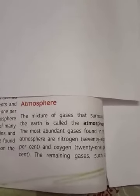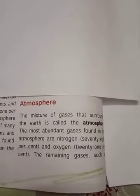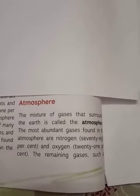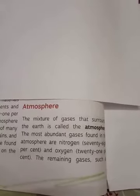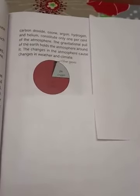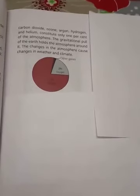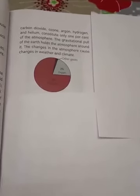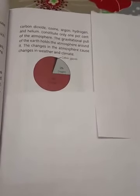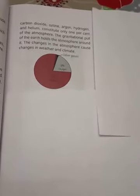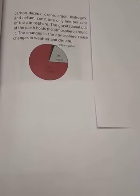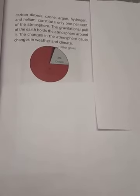Next comes the atmosphere. The mixture of gases that surrounds the earth is called the atmosphere. The most abundant gases found in the atmosphere are nitrogen at 78% and oxygen at 21%. The remaining gases — carbon dioxide, argon, ozone, hydrogen, and helium — constitute only 1% of the atmosphere. The gravitational pull of the earth holds the atmosphere around it. Changes in the atmosphere cause changes in the weather and climate.